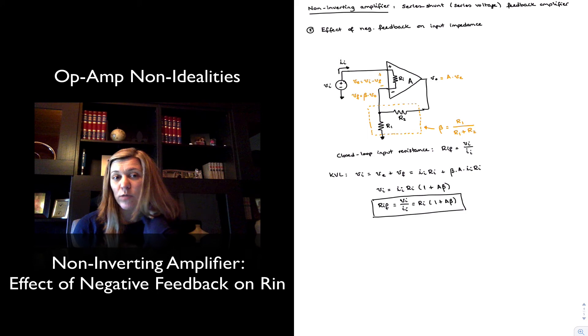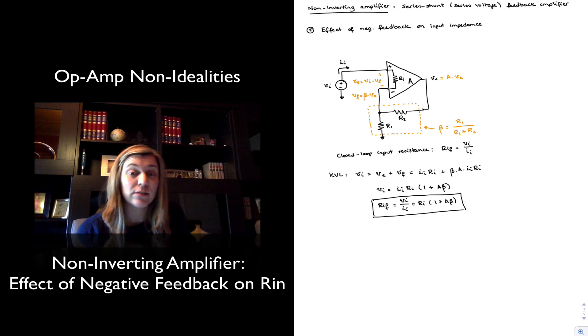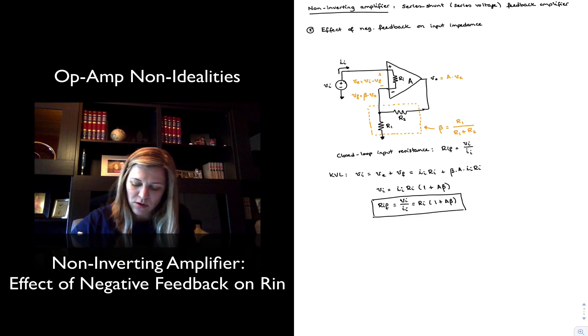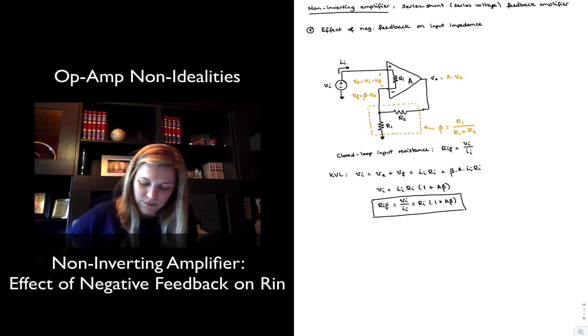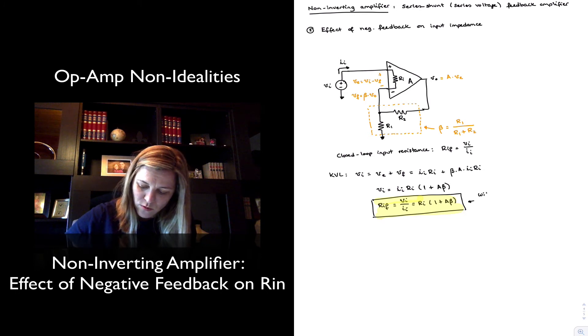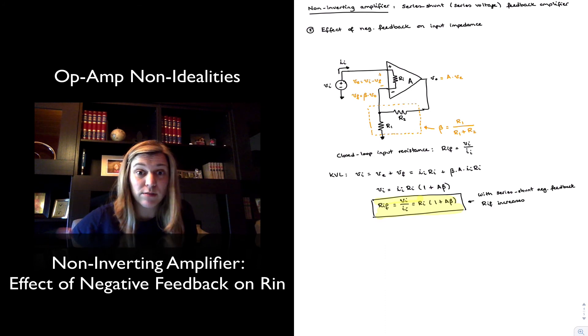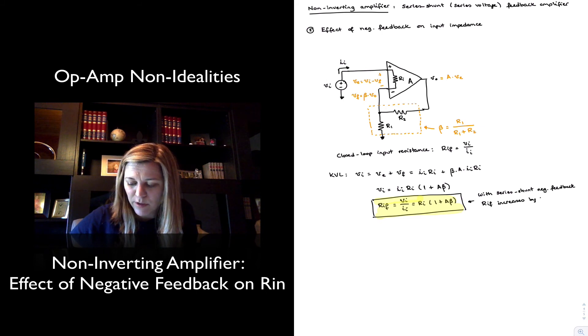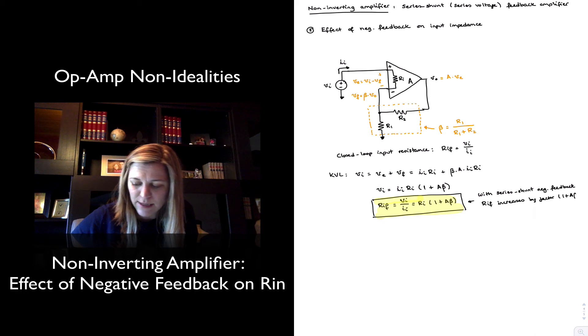And this doesn't always happen when you have negative feedback, but it does always happen when you have the series shunt type of feedback, that is the one that we have in this circuit. And so therefore we can see with series shunt negative feedback, rif increases, or the input resistance of the feedback loop increases with respect to the input resistance of the op amp by factor 1 plus a times beta.